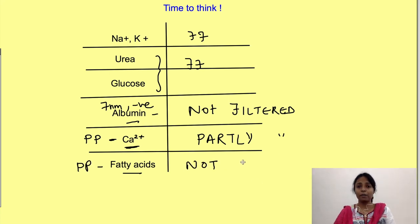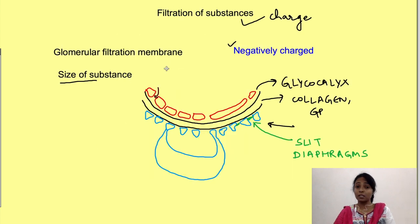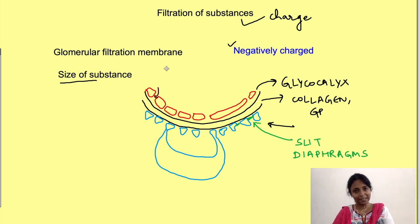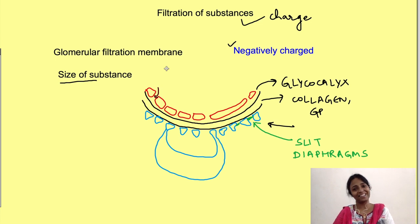There is a disease called minimal change disease in which the negative charge of the filtration membrane is lost. When this happens, proteins start appearing in the urine. Thanks for watching — if you liked the video, press the like button, share it, and subscribe to the channel Physiology Open.